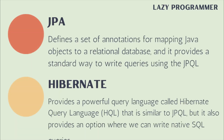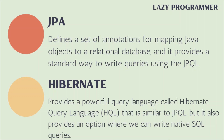JPA defines a set of annotations for mapping Java objects to a relational database, and it provides a standard query language known as JPQL. Hibernate also provides a powerful query language known as Hibernate Query Language, or HQL, which is similar to JPQL. Additionally, Hibernate allows writing native SQL queries that can be executed directly in the database — a capability not available in JPA.